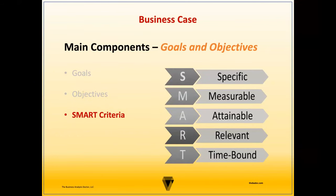To ensure objectives are clear and concise, they should be validated to ensure they meet the SMART criteria. Specific objectives describe something that has an observable outcome, leaving no room for ambiguity — answering what needs to be accomplished, why it's important, or who's involved. Measurable objectives are tracked to measure an outcome. This involves quantifiable metrics or indicators that make it clear whether the goal has been met or not, providing a way to gauge success.